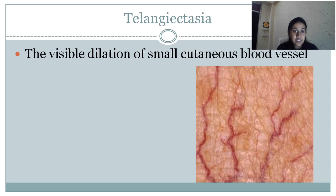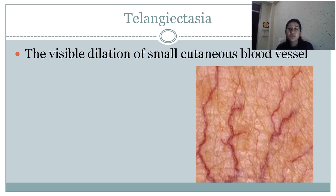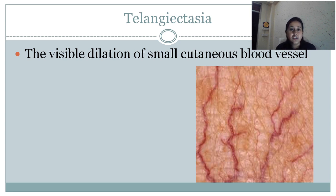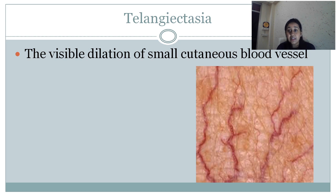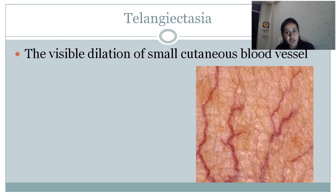Next comes telangiectasia. These are visible dilatations of small cutaneous blood vessels. It is very common nowadays because steroids are more and more used by patients. Over-the-counter use of steroids can lead to thinning of the skin and appearance of the vessels present in the dermis. Because of the thinness of the skin, we can easily see those vessels — so telangiectasia is very common.